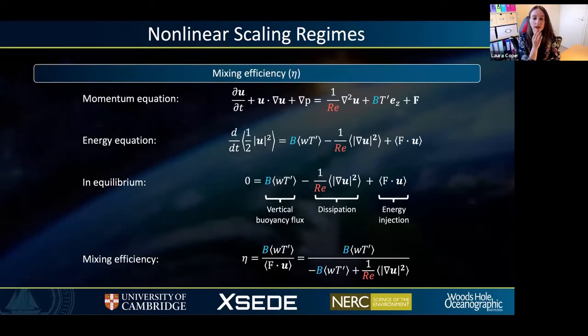We defined this to be the efficiency with which kinetic energy that's produced by the forcing is converted into potential energy. To be more specific, this can be derived from the momentum equation. If we dot the momentum equation with U and integrate over the domain, we derive the equation for the evolution of the energy. In a state of equilibrium, we have a balance between the vertical buoyancy flux, dissipation, and the energy injection due to the forcing. The mixing efficiency is defined to be the fraction of energy that's converted into potential energy, i.e., this buoyancy flux, rather than being dissipated.